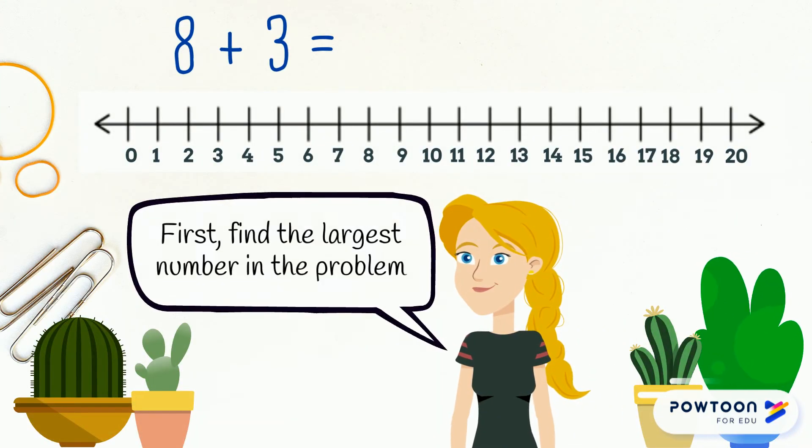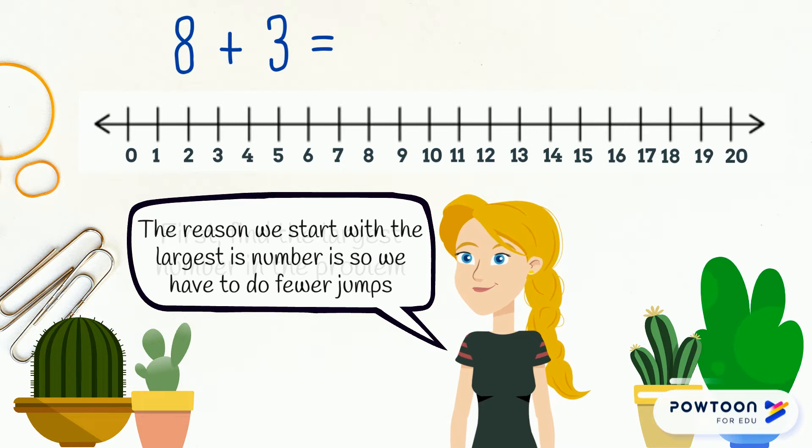First, find the largest number in the problem. The reason we start with the larger number is that we have to do fewer jumps.